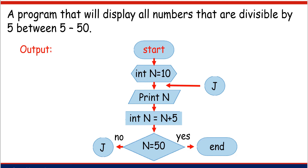Let's run the flowchart. Start. Int n is equal to 10 — the value of n is 10. Print n — the output is 10. Then go to the process symbol: int n is equal to n plus 5. The previous value is 10 plus 5 — the new value of n is 15. n equals 50, or 15 equals 50 — the answer is no, so we go to the no direction. Enter and exit the J on-page connector, then print 15. Continue with the process: int n equals n plus 5. 15 plus 5 is equal to 20 — the new value of n is 20.